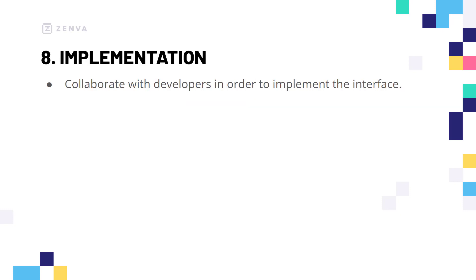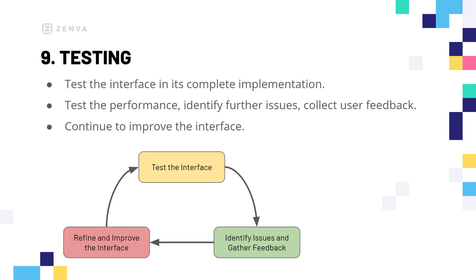After iterative design we have the implementation phase, and this is when you finally collaborate with developers in order to implement the interface. If you are a UI or UX designer you're probably not going to have too much involvement in this phase, because this is generally where the coding will take place and they'll start implementing it into the software. Once that is done, of course we need to do some testing.